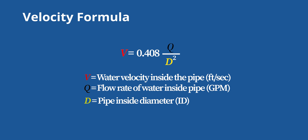Fortunately, we have already gathered this information — we just need to convert our gallons per hour into gallons per minute by dividing by 60. For the pipe inside diameter, you don't want to enter the nominal size, which is one half inch expressed as a fraction. You want to enter the actual inside diameter. The most common size of poly tubing we're using is 0.600 inches inside diameter.